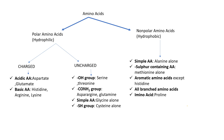Classification of amino acids based on polarity: they can be polar or non-polar. All charged amino acids are polar — acidic and basic amino acids are charged. Uncharged amino acids which are also polar include those containing hydroxyl groups (serine and threonine), sulphur-containing amino acids with a thiol group (cysteine), the amides of the acidic amino acids, and glycine.